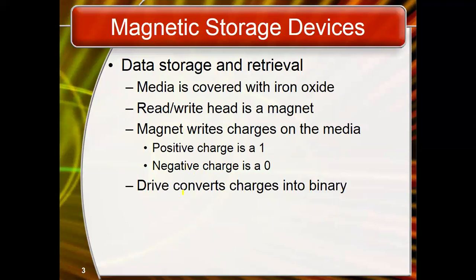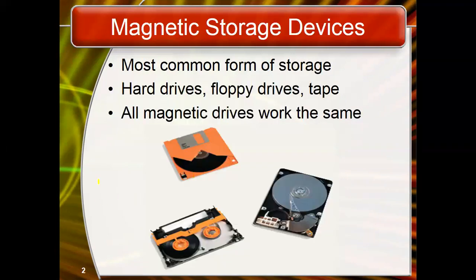The most common and enduring form of removable storage technology is magnetic storage, such as the 1.44MB 3.5-inch floppy disk, which was around for about 15 years. These are no longer found in the computer market because CDs and flash drives have replaced them. In most cases, removable magnetic storage uses a drive — a mechanical device that connects to the computer — and you insert the media that actually stores the information.